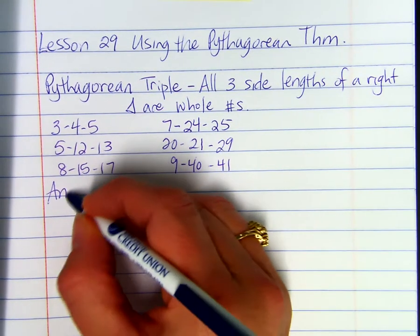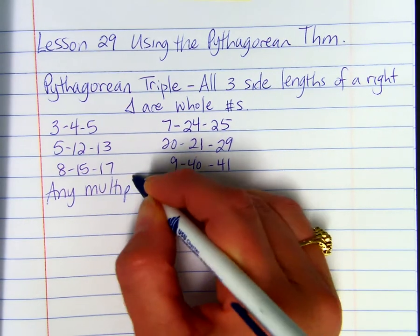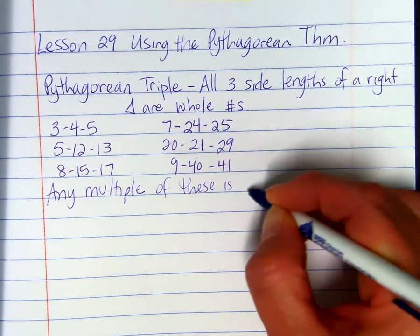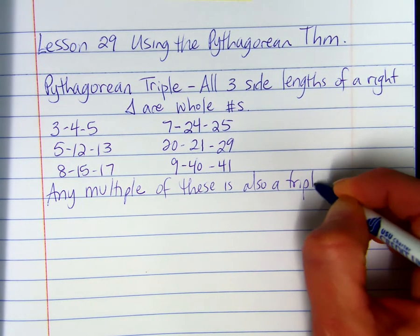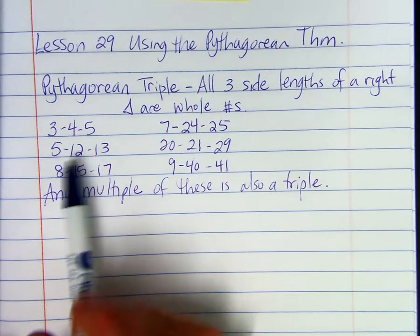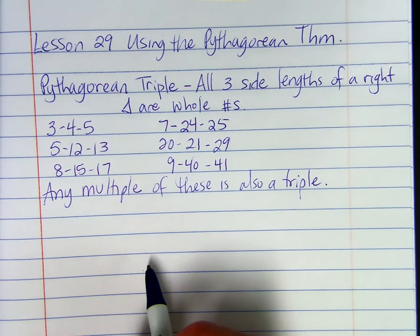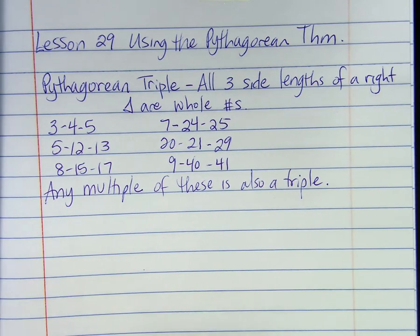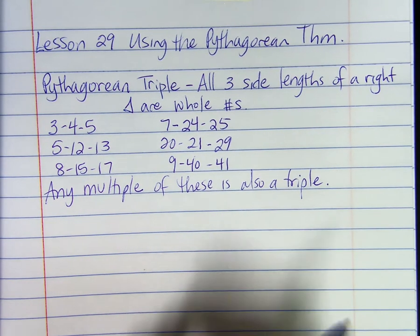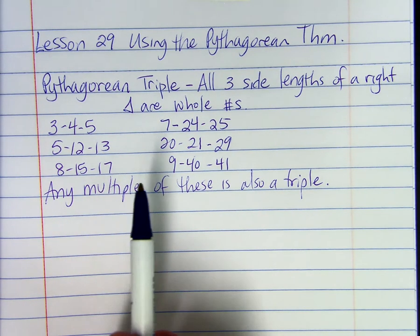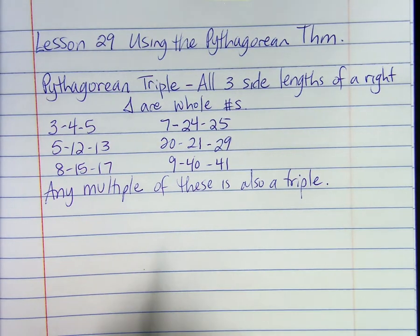Any multiple of these is also a triple. That means if you take a counting number and multiply each of the three numbers by the same counting number, that set of three numbers will also be a triple. For example, if I took 8, 15, 17 and doubled each number — multiplied them all by 2 — I'd get 16, 30, 34, and that would also be a triple.